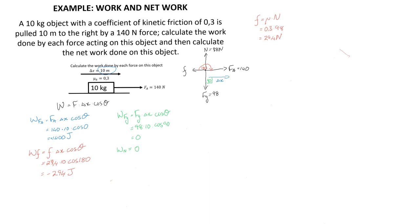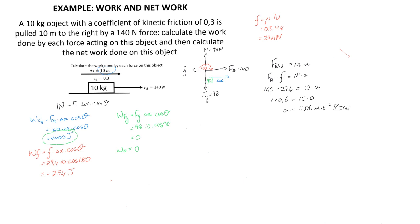When we say energy is added by the applied force, we need to identify what form it takes. The object has a net force acting on it and therefore, by Newton's second law, will accelerate. The net force is the applied force minus the friction force: 140 newtons minus 29.4 newtons equals the mass (10 kg) times the unknown acceleration. This gives a net force of 110.6 newtons on a 10 kg object, so the acceleration is 11.06 meters per second squared to the right.